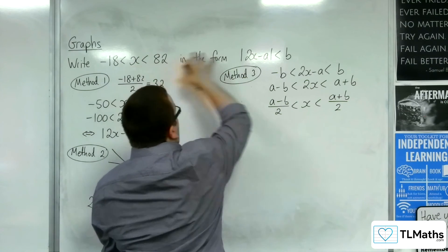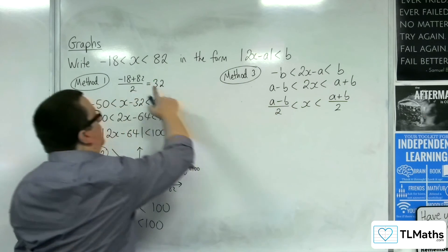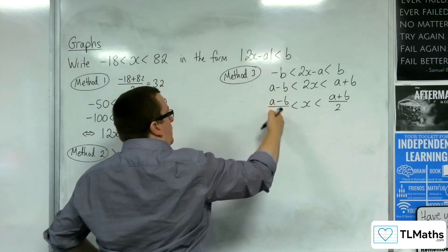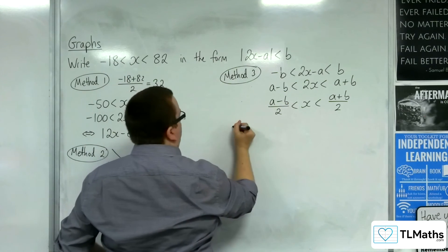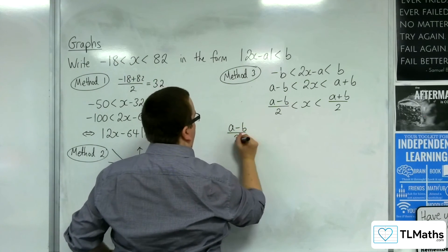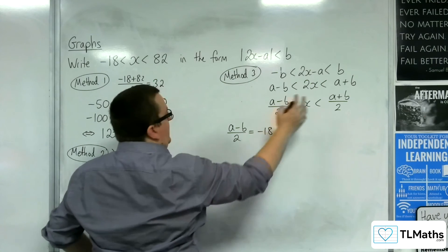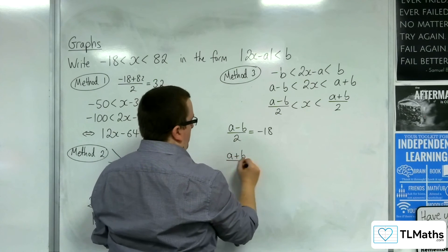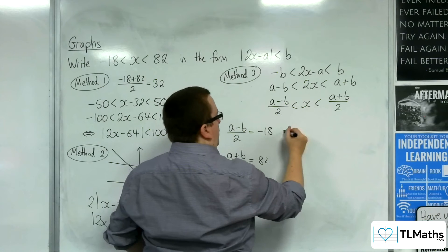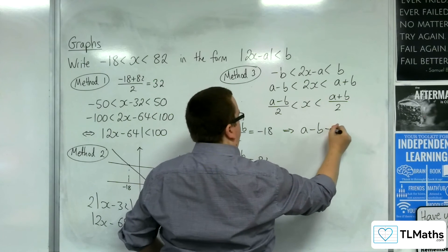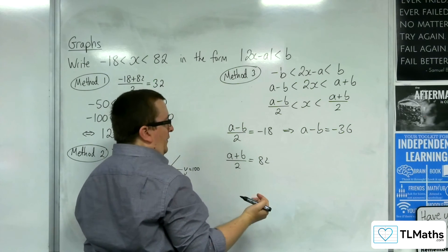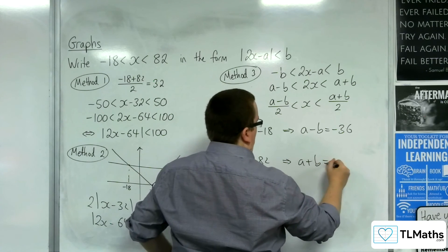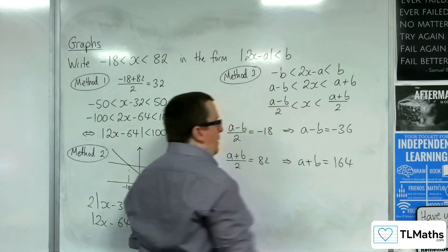So in order for this to be equivalent to this, this must be equivalent to this also. Which means that the (a - b)/2 has got to be the -18, and the (a + b)/2 has got to be the 82. So multiplying both by 2, we get a - b = -36, that's equation number 1. And then a + b = 164, multiplying the 82 by 2.